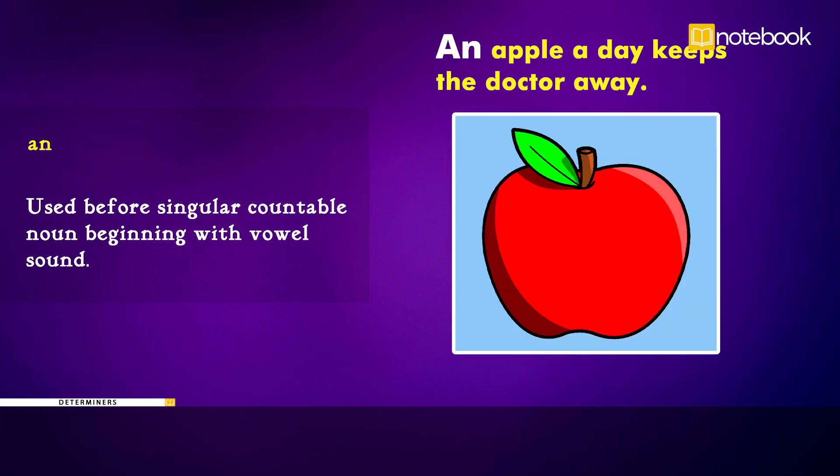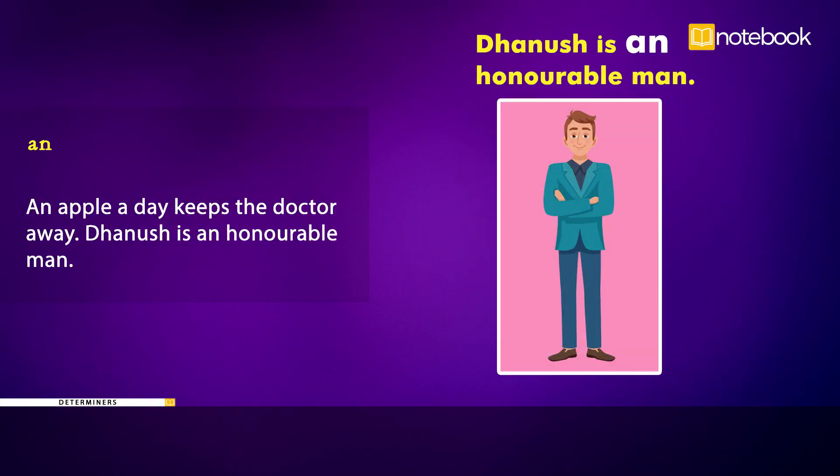An — used before a singular countable noun beginning with a vowel sound. Examples: An apple a day keeps the doctor away. Dhanush is an honorable man.